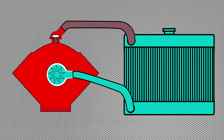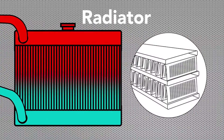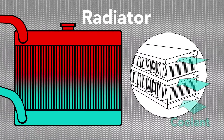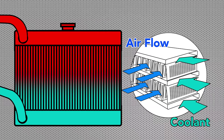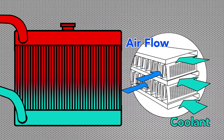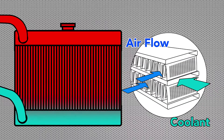Heated coolant flows into the radiator inlet and is passed through a series of tubes and fins that effectively dissipate the heat from the coolant. Radiator restrictions can compromise its ability to transfer heat. These can be either external airflow or internal coolant restrictions.